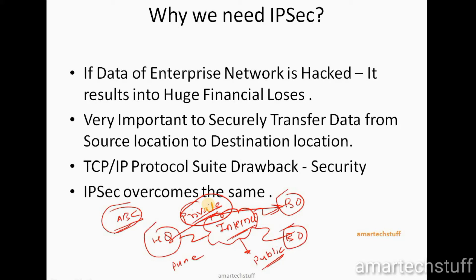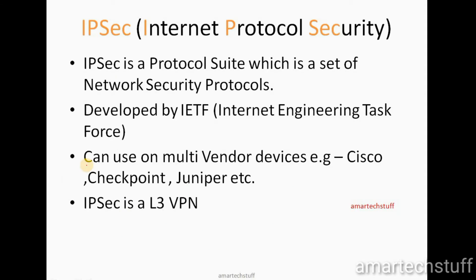The solution to this problem is VPN. VPN makes it possible to transfer private data securely over a public network. Another reason we need IPSec is that the TCP/IP protocol suite does not have any security built-in parameters, so we need IPSec to provide that security.